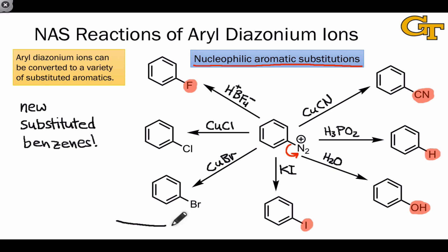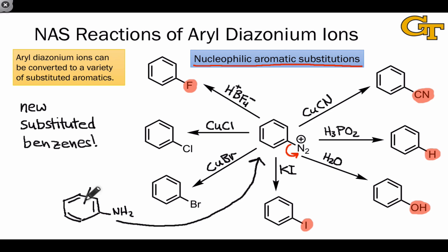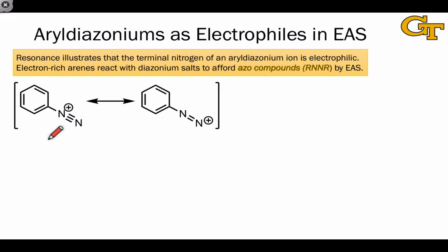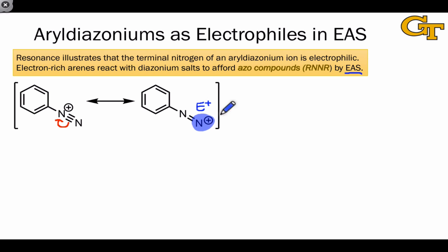Adding aryl diazoniums to our synthetic toolbox opens the door to the synthesis of new substituted benzenes. Since we can synthesize the diazoniums from anilines, it's also straightforward to convert a substituted aniline into a relatively complex product by converting to a diazonium and then doing a nucleophilic aromatic substitution reaction. One last point of interest is that we can draw an alternative resonance structure of the aryl diazonium in which the terminal nitrogen has positive charge, showing that this terminal nitrogen can act as an electrophile. In fact, it's possible to use aryl diazoniums as active electrophiles in EAS, not as the aromatic but as the active electrophile E-plus, provided the aromatic we use is electron-rich.